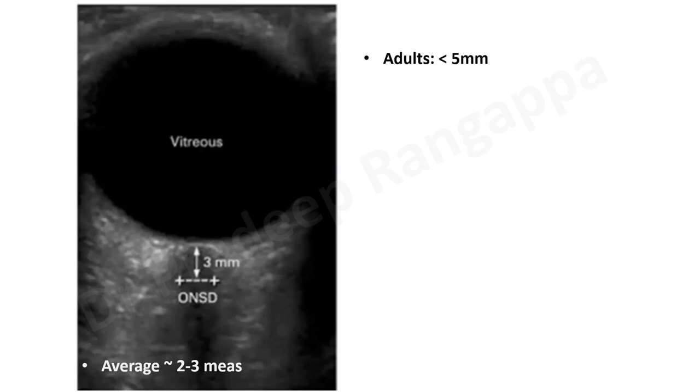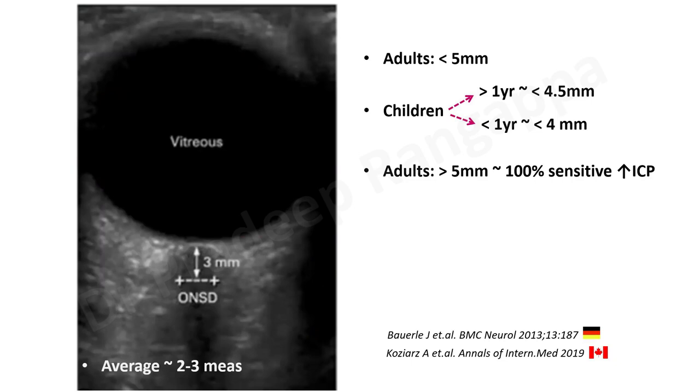It is suggested that an average of two to three measurements be taken to decide if ICP is really elevated. In adults, the optic nerve sheath diameter should be less than five millimeters. In children more than one year old, it should be less than 4.5 millimeters. In children less than one year, it should be less than four millimeters.